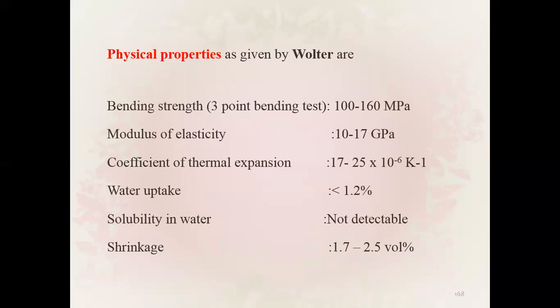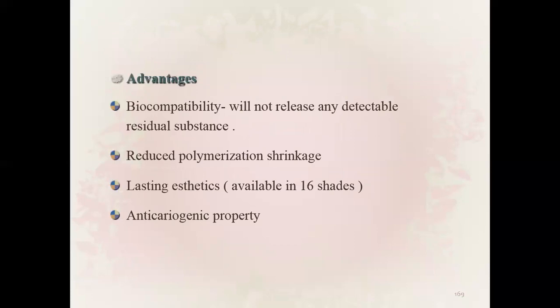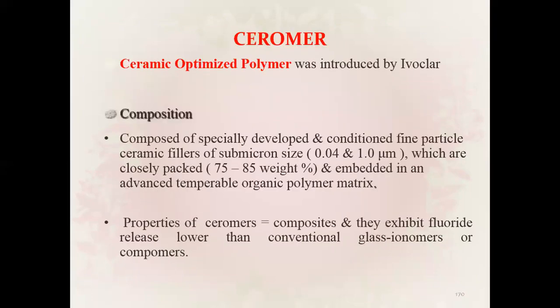Physical properties of Ormocer: bending strength 100 to 160 MPa, modulus of elasticity 10 to 17 GPa. Advantages: biocompatibility, will not release any detectable residual substances, reduced polymerization shrinkage, lasting aesthetics available in 16 shades, and antipyrogenic property. We have Ceromer — ceramic optimized polymer — composed of specially developed fine particles of ceramic fillers of sub-micron size closely packed and embedded in an advanced temperable organic polymer matrix.